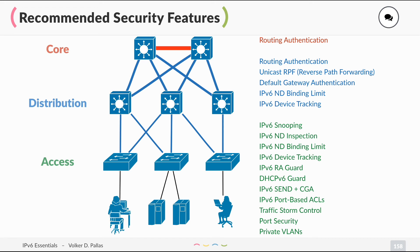In the distribution layer you should also enable unicast RPF (reverse path forwarding), enable default gateway authentication, set IPv6 neighbor discovery binding limit, and IPv6 device tracking. In the access layer you should enable IPv6 snooping on your switches, set neighbor discovery inspection, neighbor discovery binding limit, IPv6 device tracking, router advertisement guard, DHCPv6 guard, SEND (secure neighbor discovery), CGA (cryptographically generated addresses) as part of the security extensions, and IPv6 port-based ACLs.